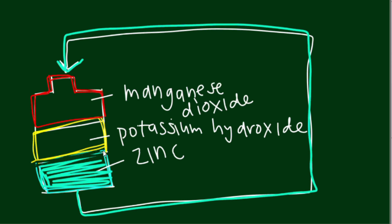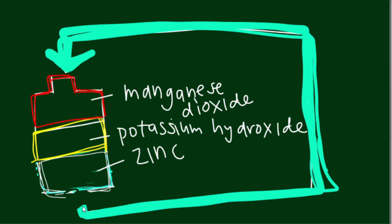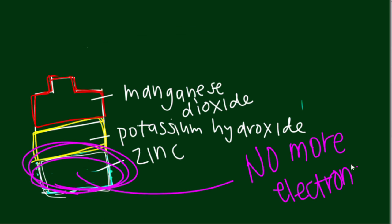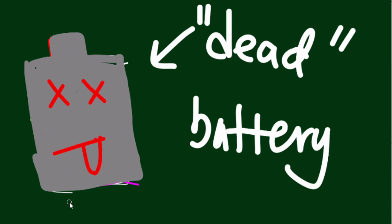The problem with all the batteries we've talked about so far is that eventually, the atoms in the anode run out of electrons to pass onto the cathode. When all of the metal of the anode is oxidized, the battery is considered dead.